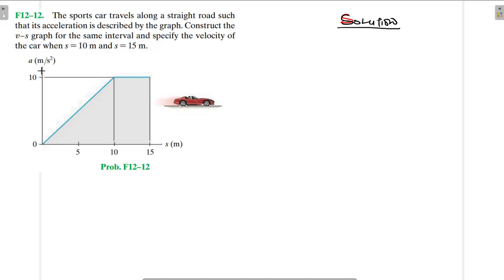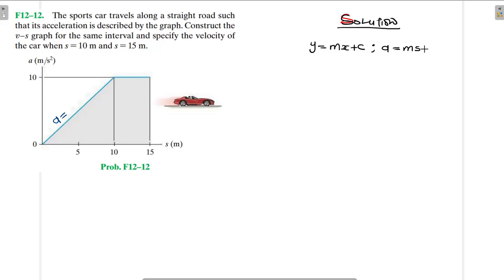So we have the acceleration-position graph. What is the equation for this particular line from 0 to 10 meters? When you look at this line, it is a linear line — a straight line — meaning it's governed by the function y = mx + c. In our case, y is the acceleration, m is the gradient — the change in y divided by the change in x — and x is the displacement for us. The intercept c is zero here.